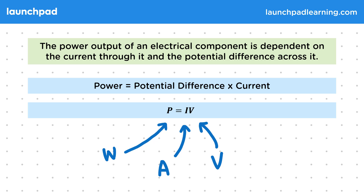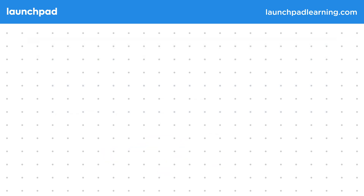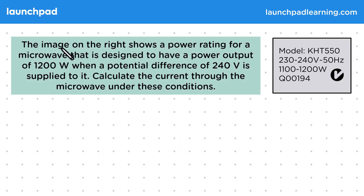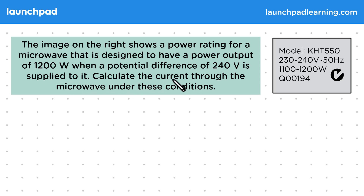Let's have a look at an example using this equation. The image on the right shows a power rating for a microwave that is designed to have a power output of 1200 watts when a potential difference of 240 volts is supplied to it. Calculate the current through the microwave under these conditions.